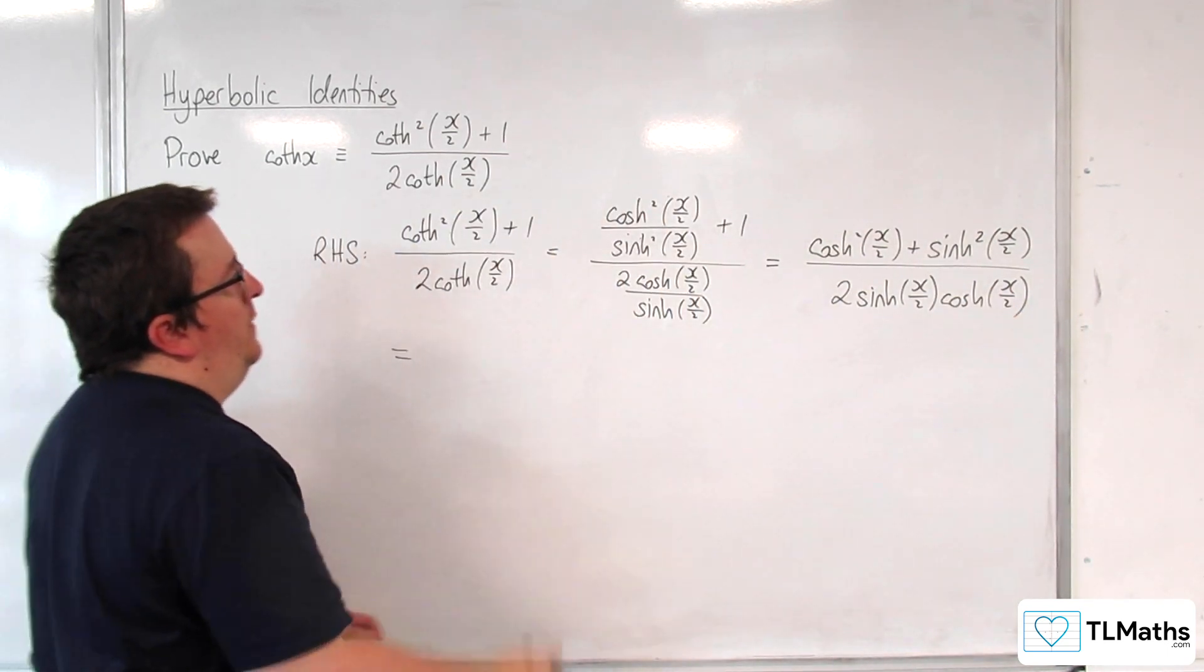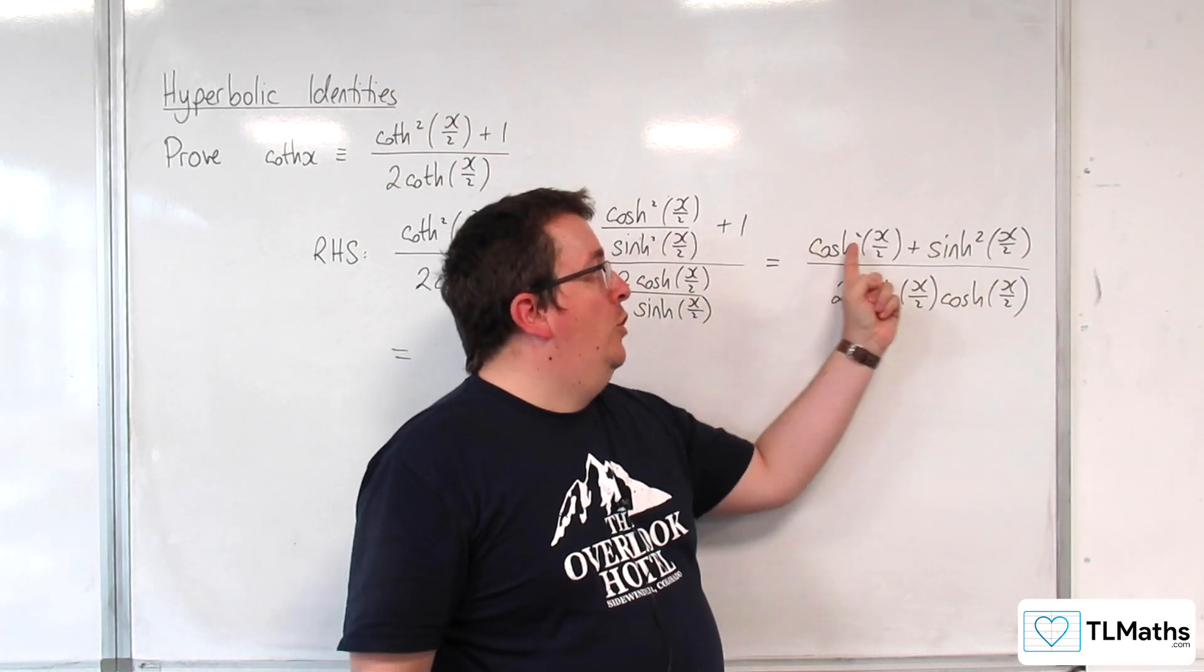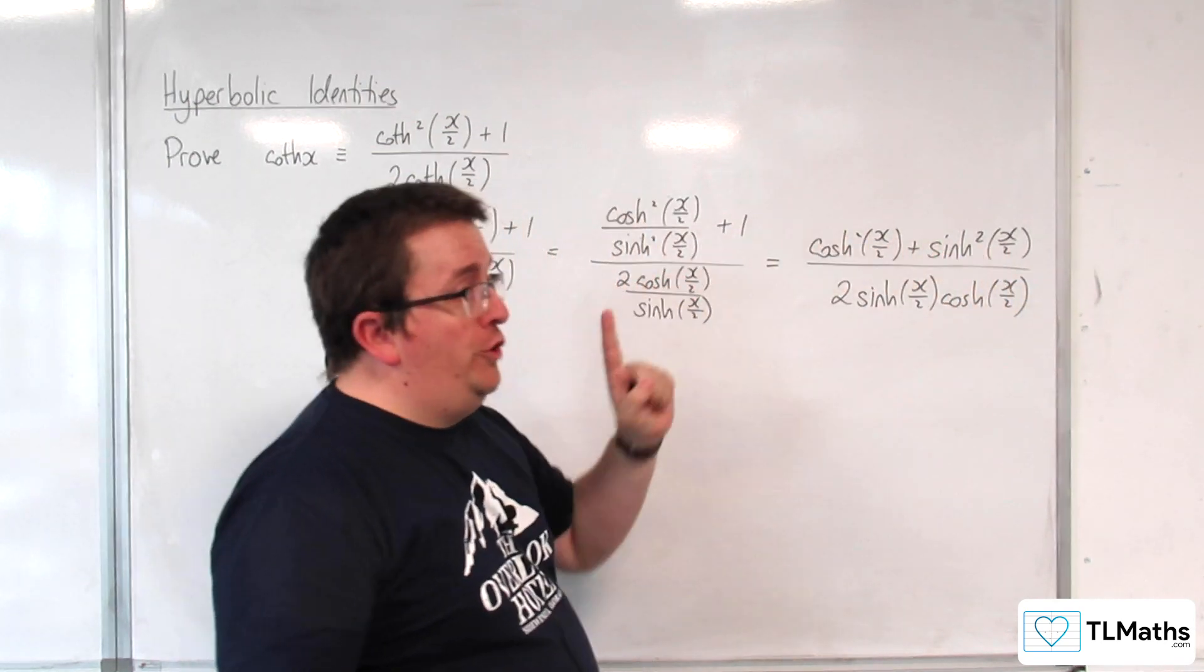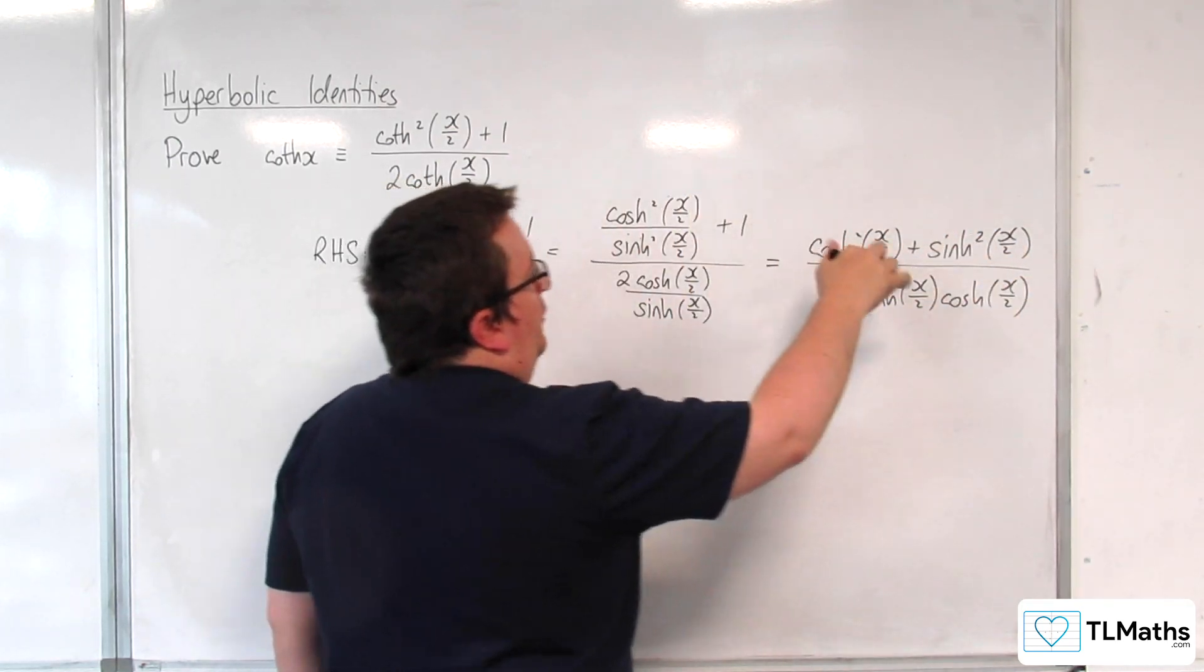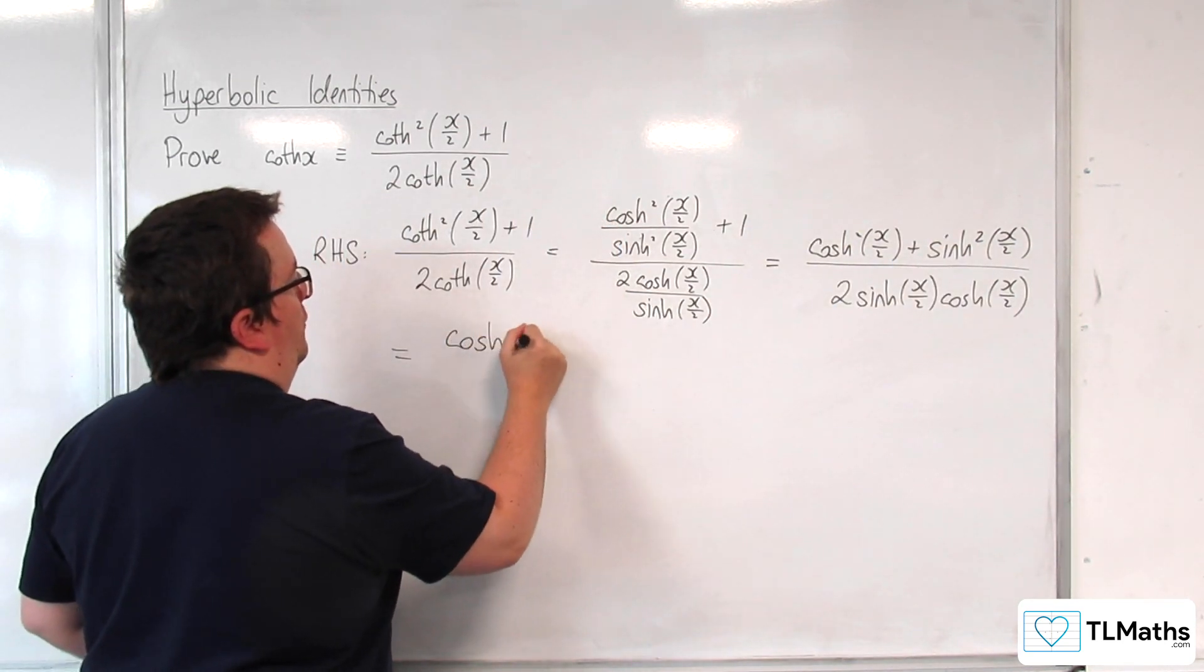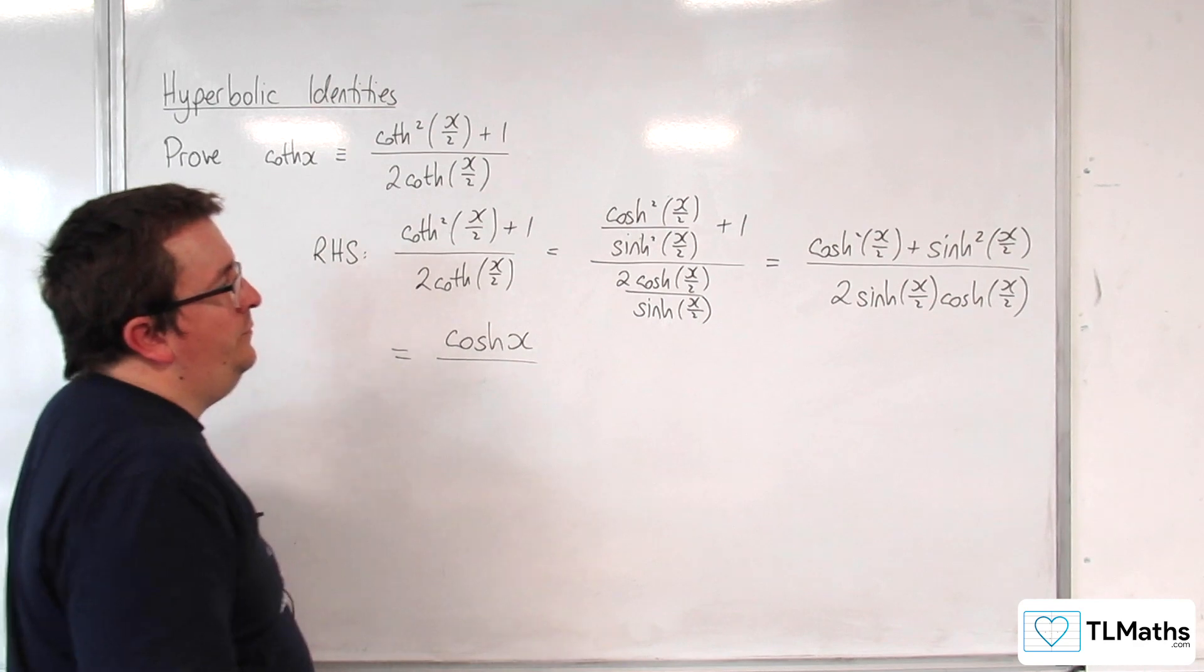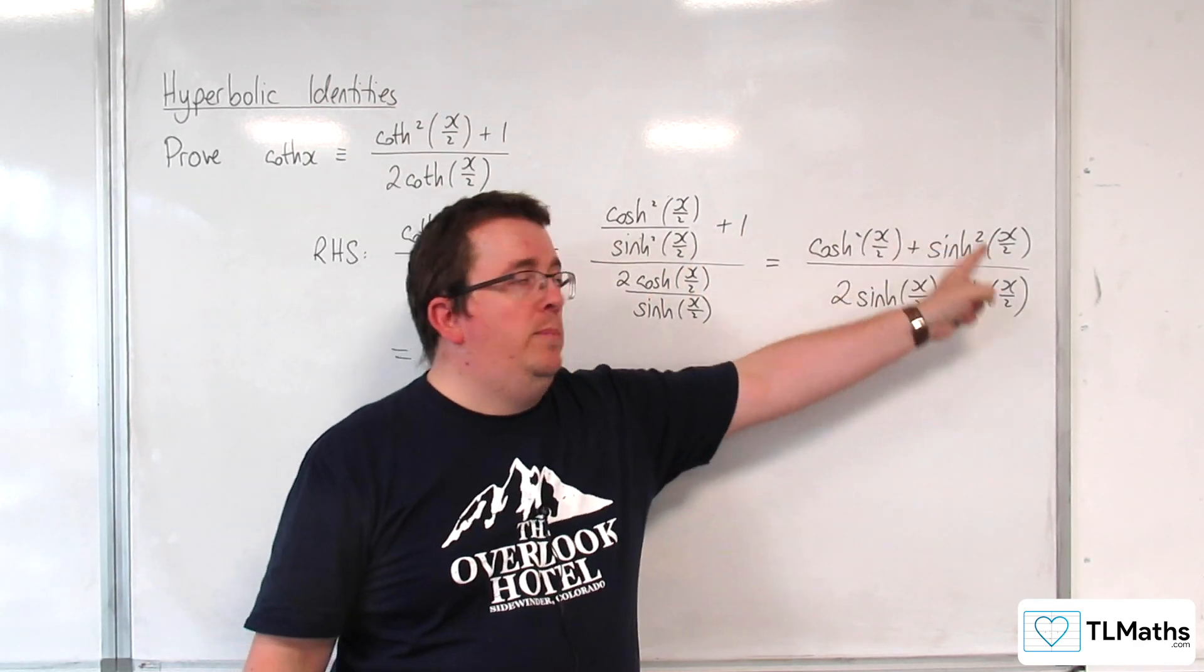So in the numerator, we should be identifying that as cosh of 2x is cosh squared plus sinh squared. But because we've got x over 2's, this is just going to be cosh of x. So that's from the identity cosh of 2x is cosh squared plus sinh squared.